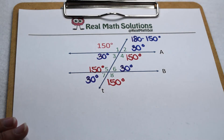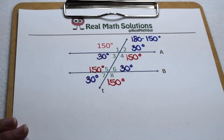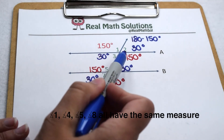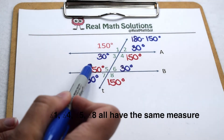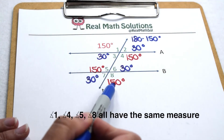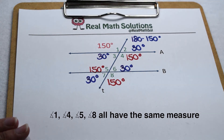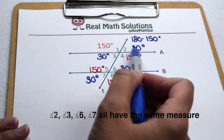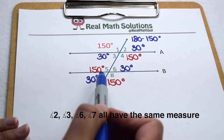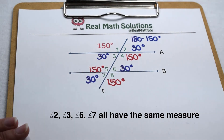Using the same problem, we took two different paths and arrived at the same conclusion. Using our line and angle relationships, those aren't even the only two paths we can take. But no matter what path we follow, we can see that angles one, four, five, and eight all have the same angle measure, while angles two, three, six, and seven always have the same angle measure.